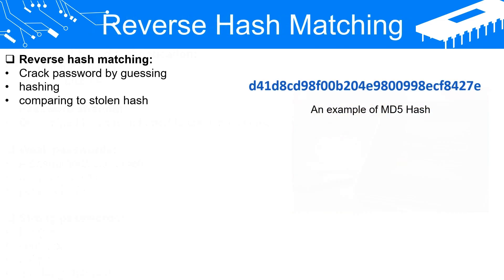Unraveling Reverse Hash Matching. One method attackers use to crack passwords is reverse hash matching. To understand this, we first need to understand how passwords are stored. To maintain security, systems don't store the actual password; instead, they store a hash of the password. A hash is a long string of characters generated by a hash function from the original password. Even a small change in the original password results in a dramatically different hash. Hashes are meant to be one-way functions — it's easy to compute a hash from the original data, but it's designed to be difficult or impossible to retrieve the original data from the hash.